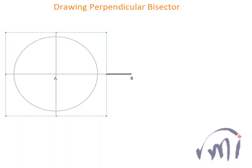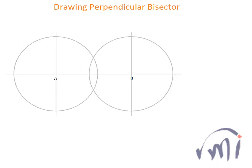And from B if I draw the circle it will be something like this. Then you can see that these two circles actually intersect each other at this point and this point.